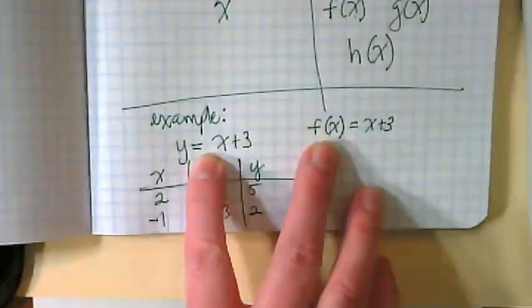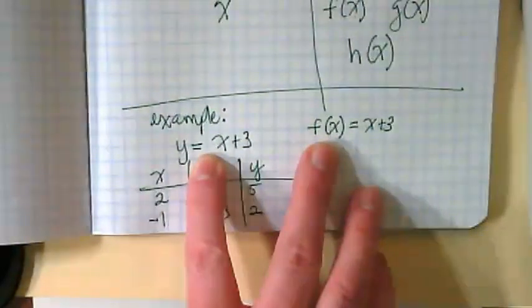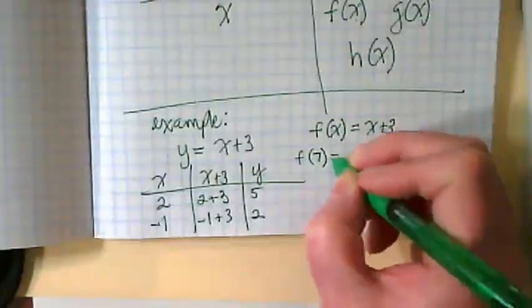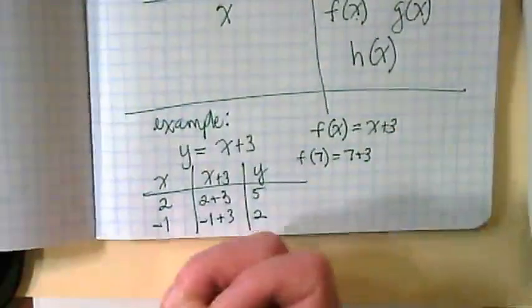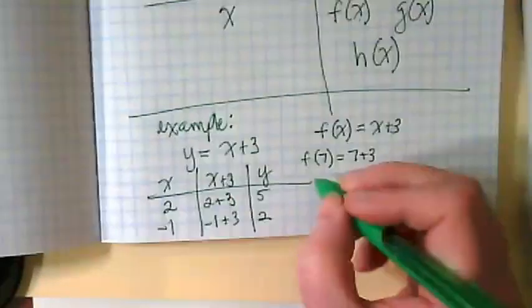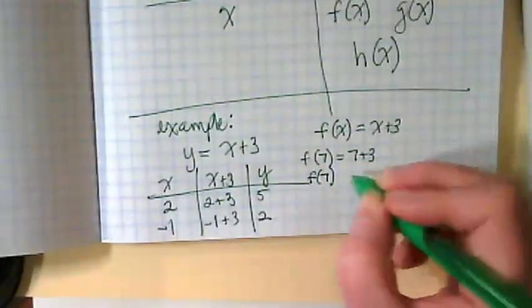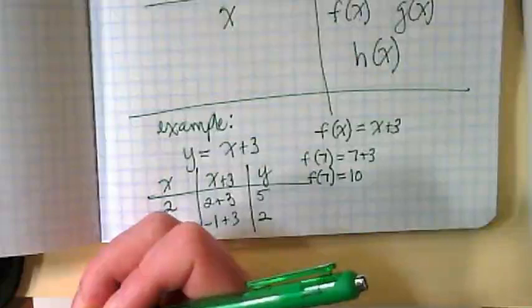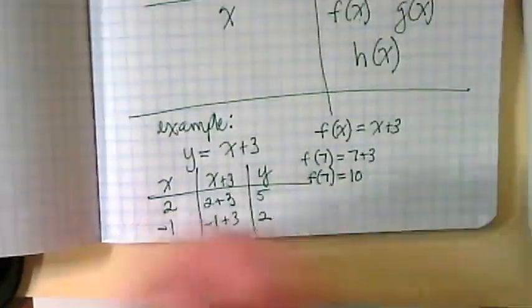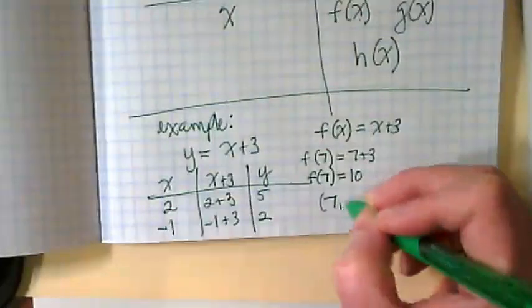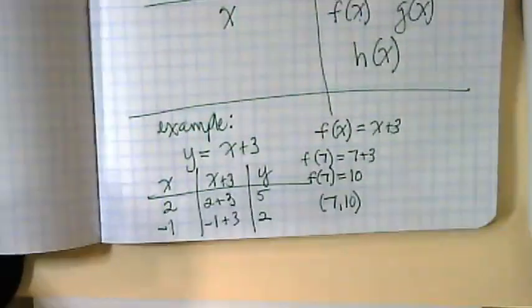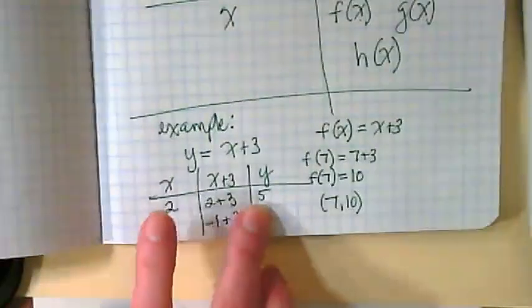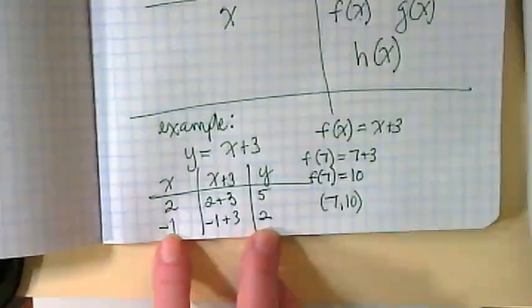And in a problem, you might be given, well what if your x is 7? You would rewrite this as f of 7 is equal to 7 plus 3. We're basically saying when our x is 7, it equals 10. And we would write this as 7 comma 10 for our xy pair. Versus over here, we often didn't rewrite it, we just knew that this was 2 comma 5, negative 1 comma 2.